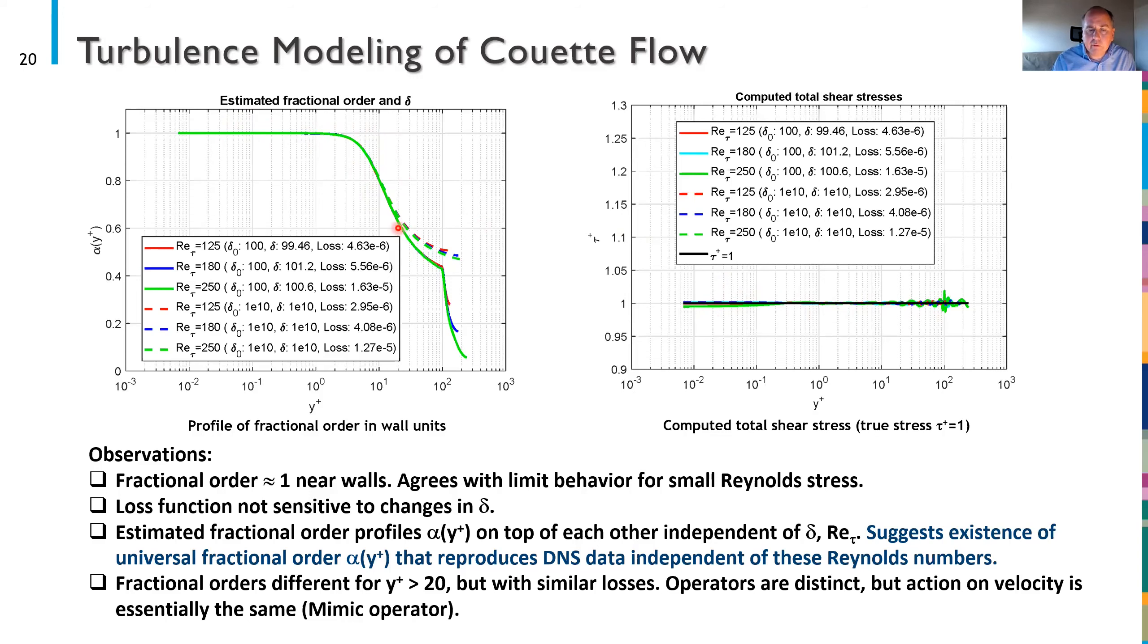But if you go back to the left figure you observe another instance of operator mimicking. So for example if you consider the two red curves the two different initial guesses for δ but for the same Reynolds number the loss values are pretty comparable but for y plus greater than about 20 the fractional order profiles are noticeably different. So this means we have two different operators but because we're getting very good results here very low losses the action of these two different operators on the velocity in the reduced RANS equations is pretty much the same. So it's another operator mimicking effect.